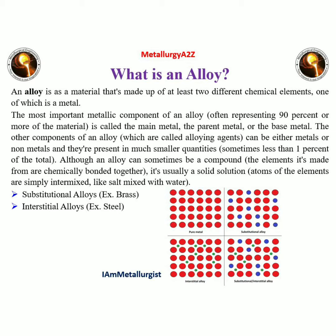The other components of an alloy, which are called alloying agents, can be either metals or non-metals, and they are present in much smaller quantities — sometimes less than 1% of the total.